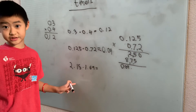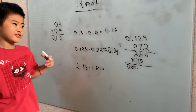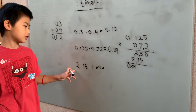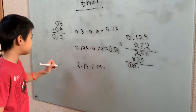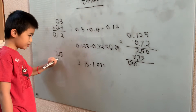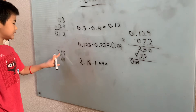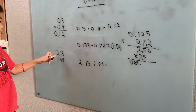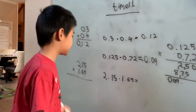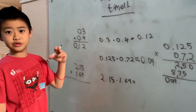Now what happens when we have digits before the decimal point — ones digits? The units are different and it gets a little confusing. Here's what we're going to do: line them up — 2.15 and 1.69. This time, we forget about all the decimal points and just compute 215 times 169 using the regular multiplication algorithm.